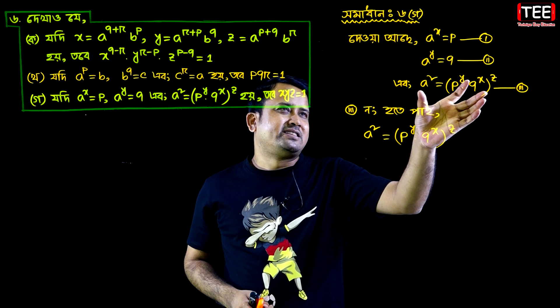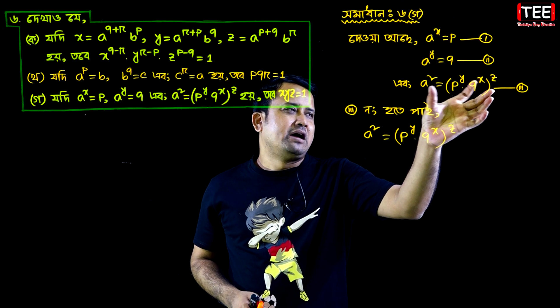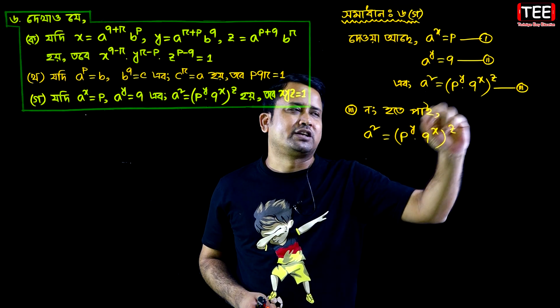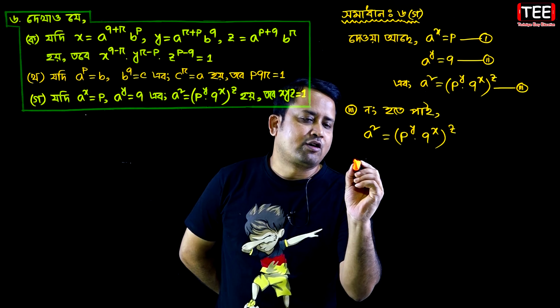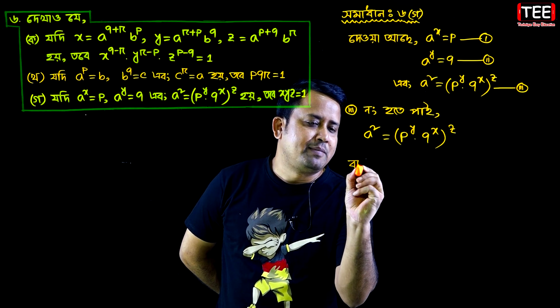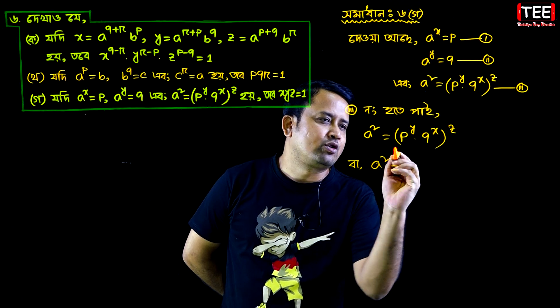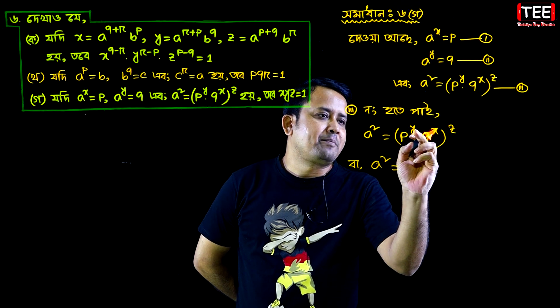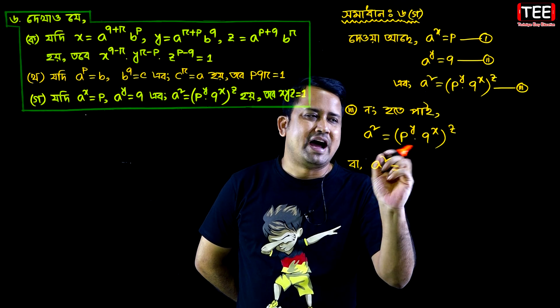Then we have 2. Then we have 2. So we have 2, so we have 3. Then we have 3. Then I have to write 2. So xy z equal to one. It is z.